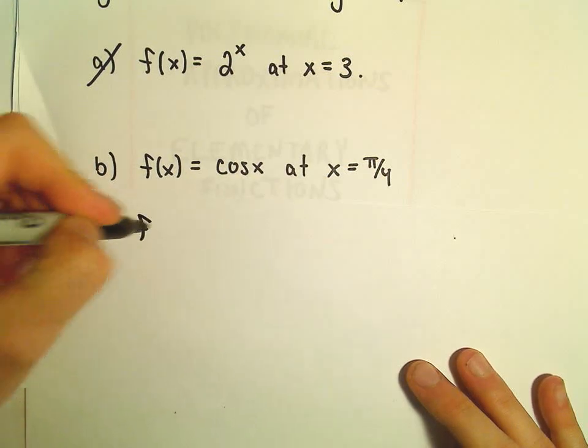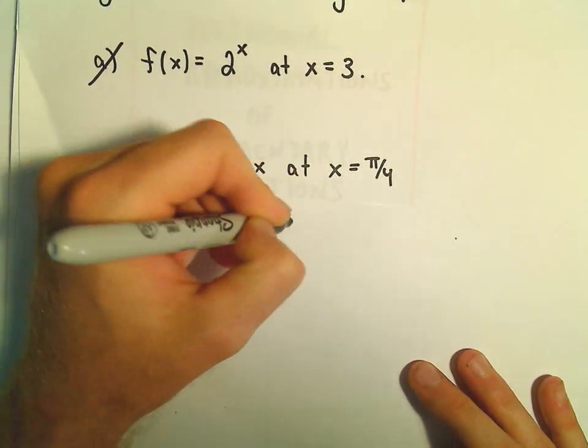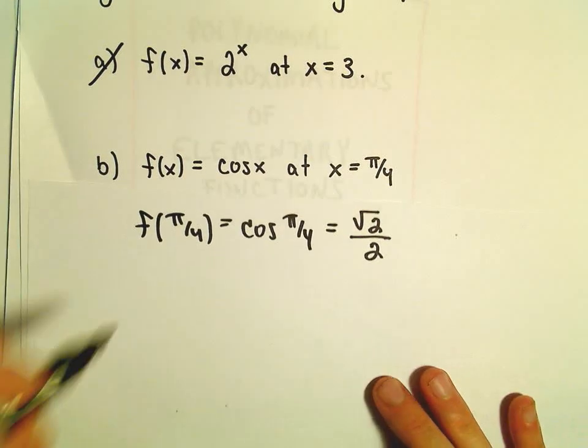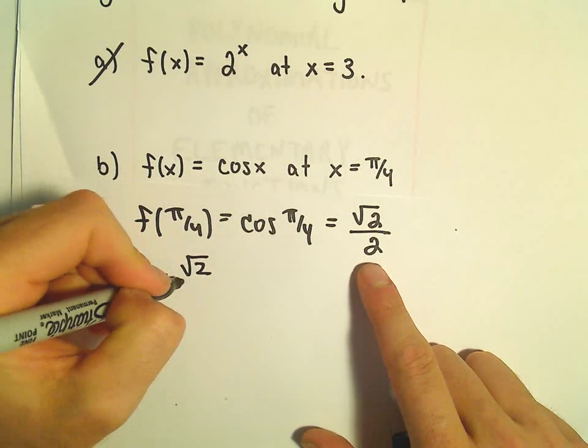If we plug π/4 into our function, we get cosine of π/4, which is √2/2. So when we do y minus the y-coordinate, the y-coordinate is going to be √2/2.